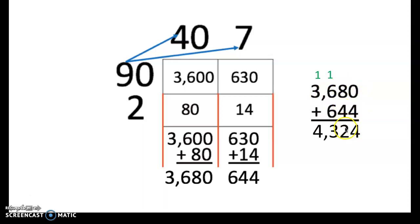Zero plus four is four. Eight plus four is twelve. Put down the two in the ones place and carry that ten. Six plus six is ten. Six plus six is twelve. Plus that carried ten is thirteen. Put down the three. Carry the one. Three plus one is four. And our final product is 4,324.